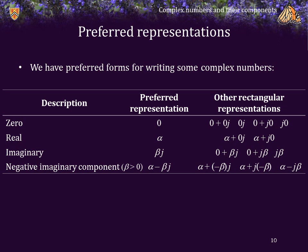We do have some preferred forms of writing complex numbers. For example, we write 0 rather than 0 plus 0j. If a complex number is real, we leave off the imaginary component and just write it as alpha. If it is imaginary, we write it as beta j rather than 0 plus beta j. And if the imaginary component is negative, we write it as alpha minus beta j rather than alpha plus negative beta j — it's just cleaner that way.